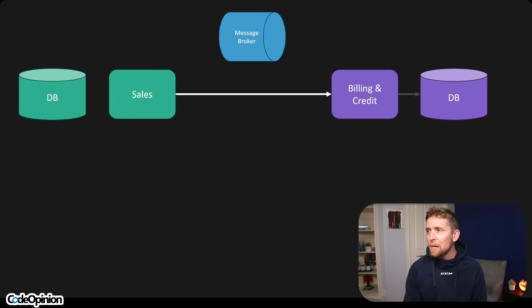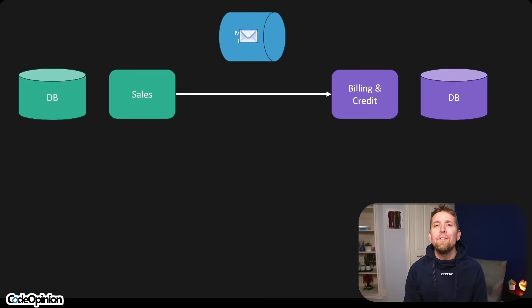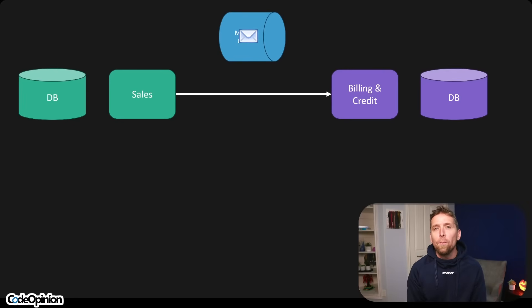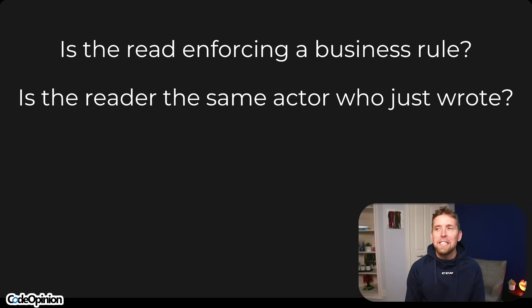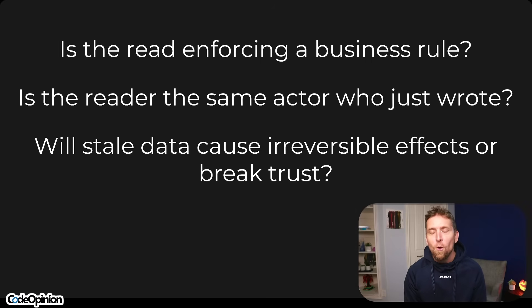Here's a simple example of why distributing data and using it from another boundary for business logic is kind of a disaster. Sales makes a call to BillingCredit to see if a customer has available credit to place an order. Let's say they do — we persist the order to our database, then publish an event to our message broker so BillingCredit can update the balance. Then with concurrent requests, Sales makes that same request again — yeah, you have available credit — we place that order and publish our event. But we make another request before we've even processed that event and updated BillingCredit, so this request comes back saying yes, you have available credit, even though we haven't processed that message asynchronously yet.